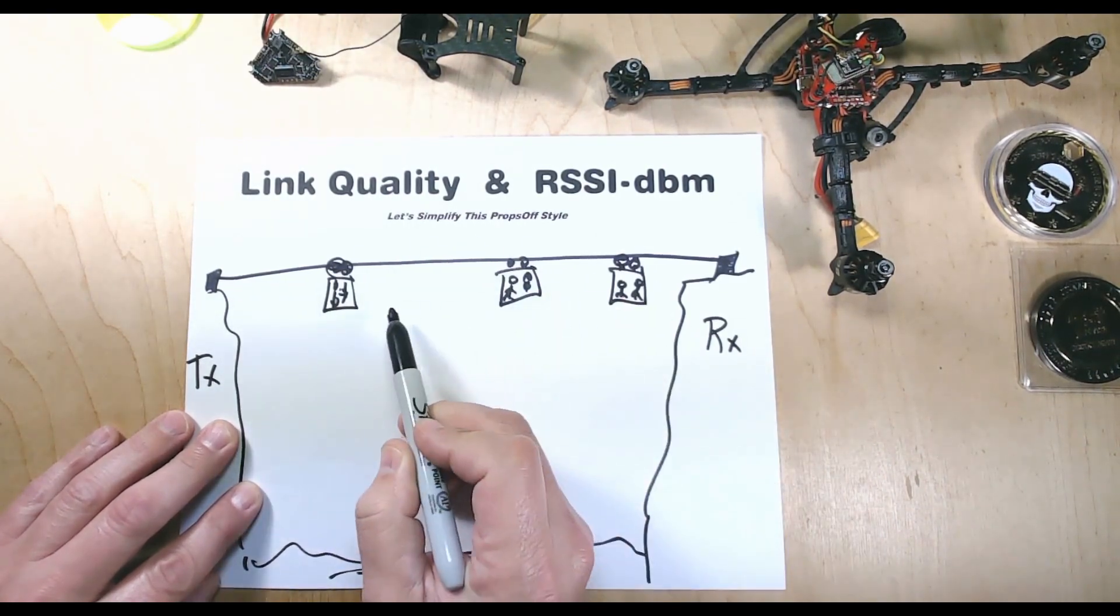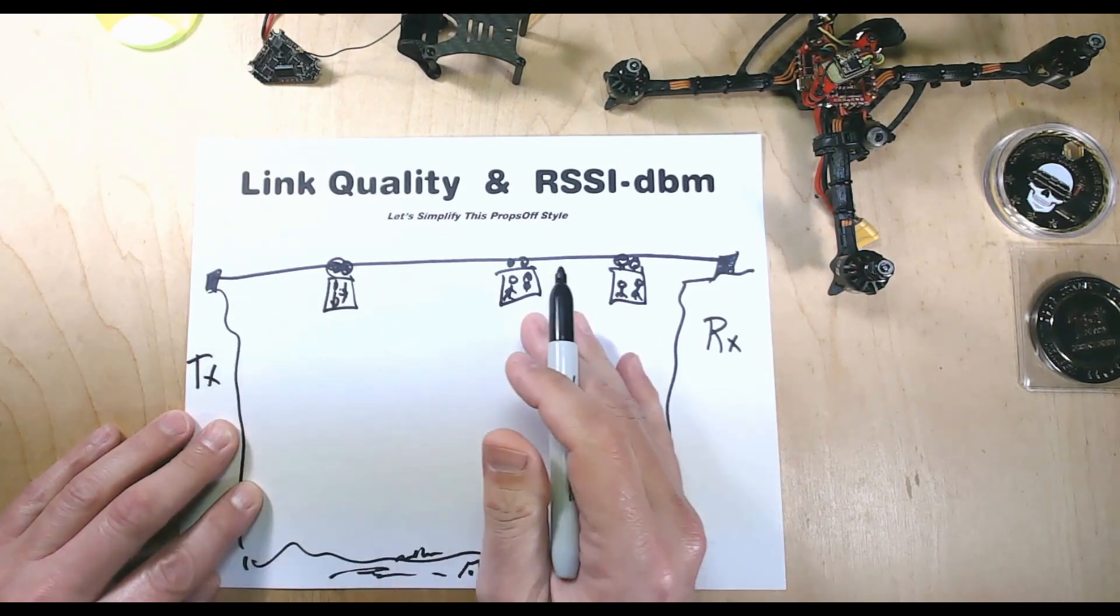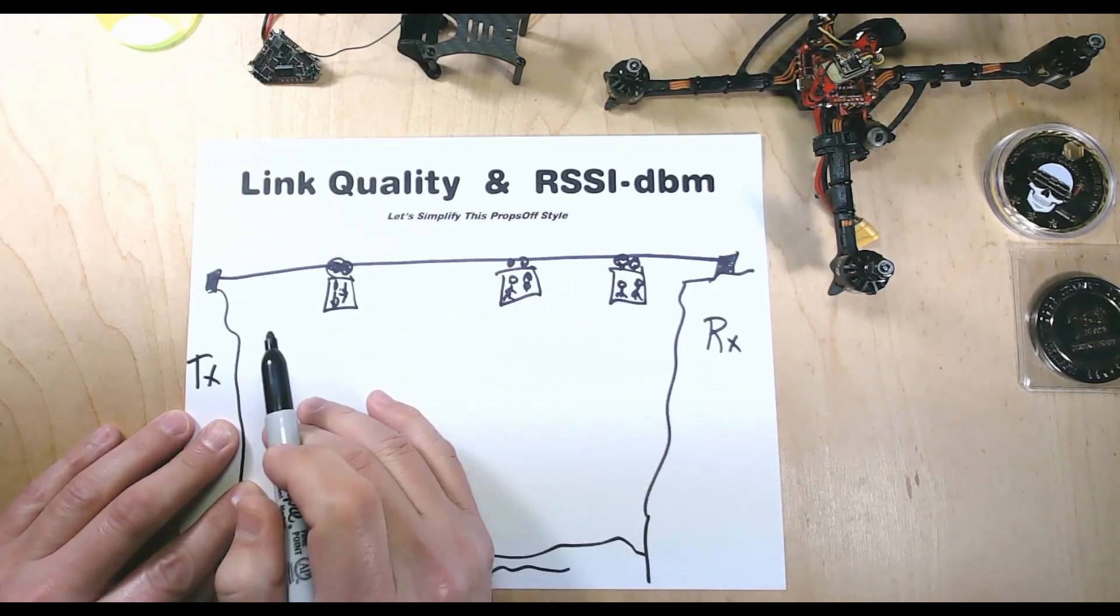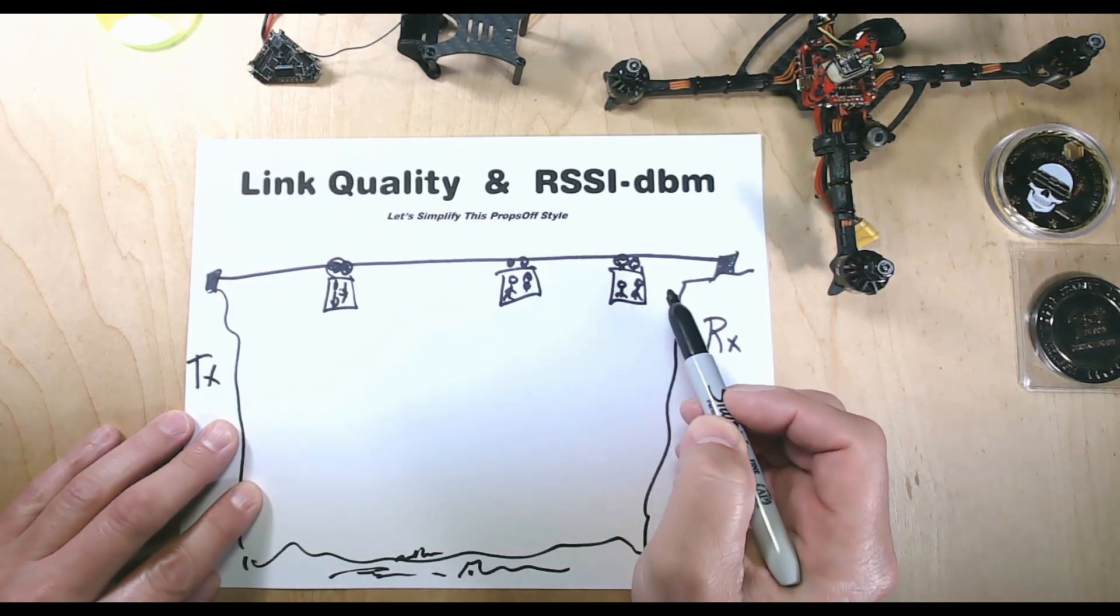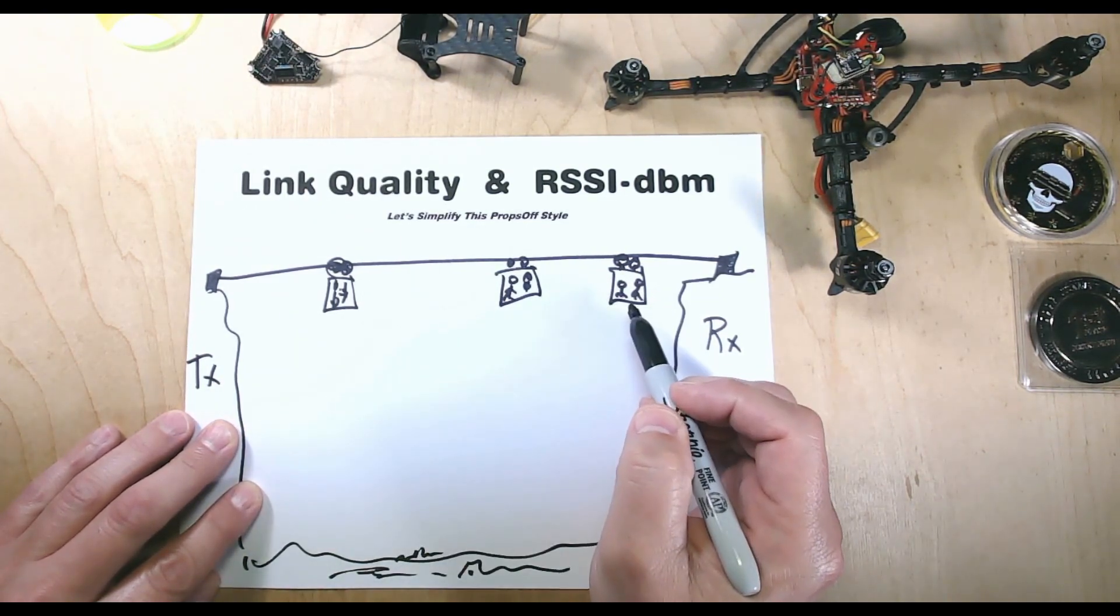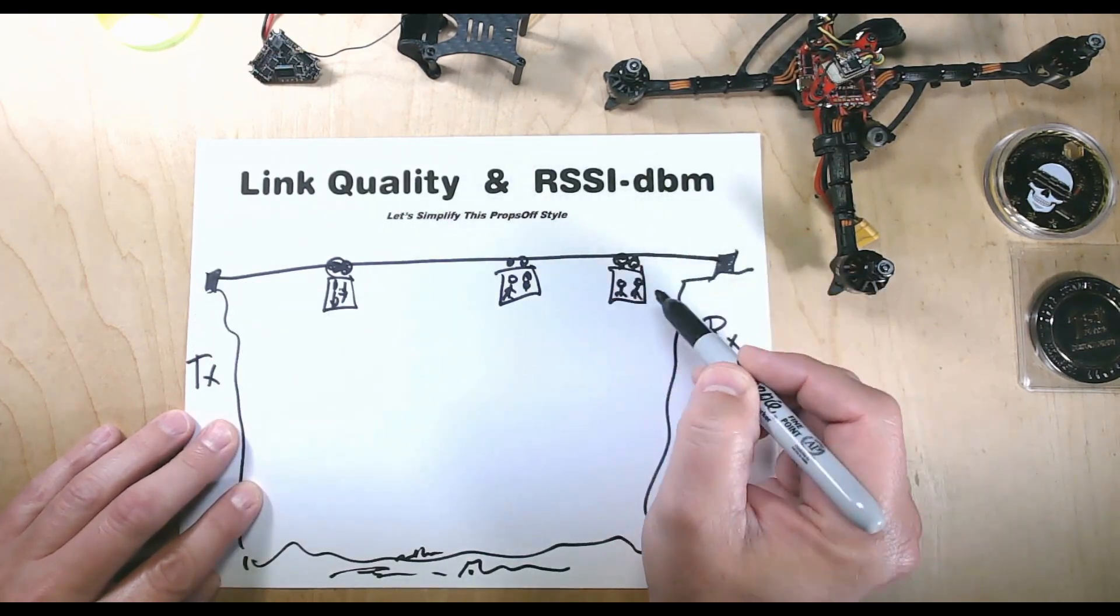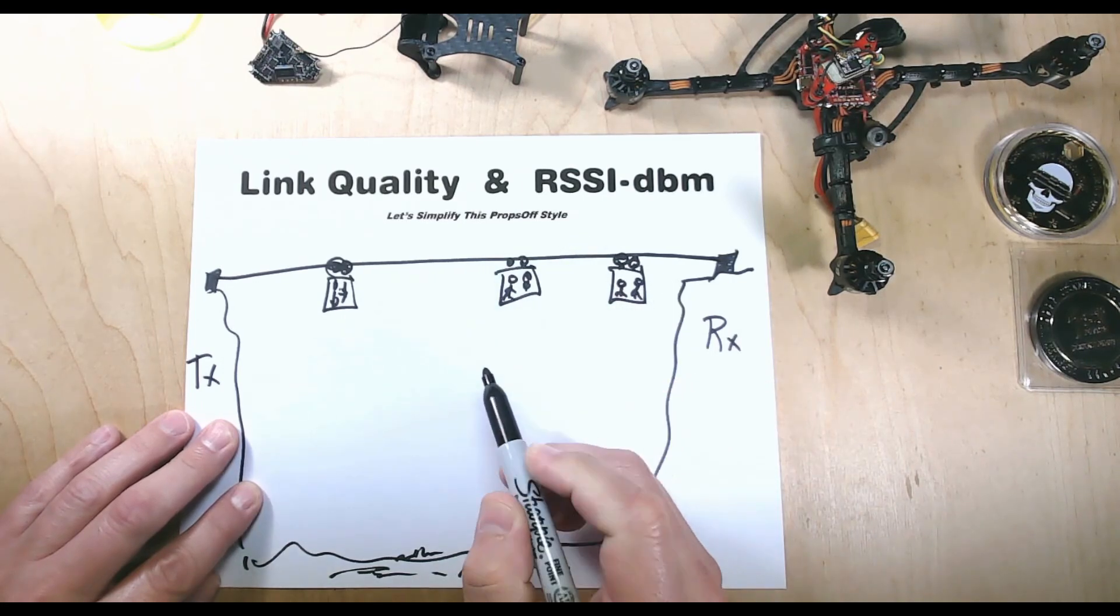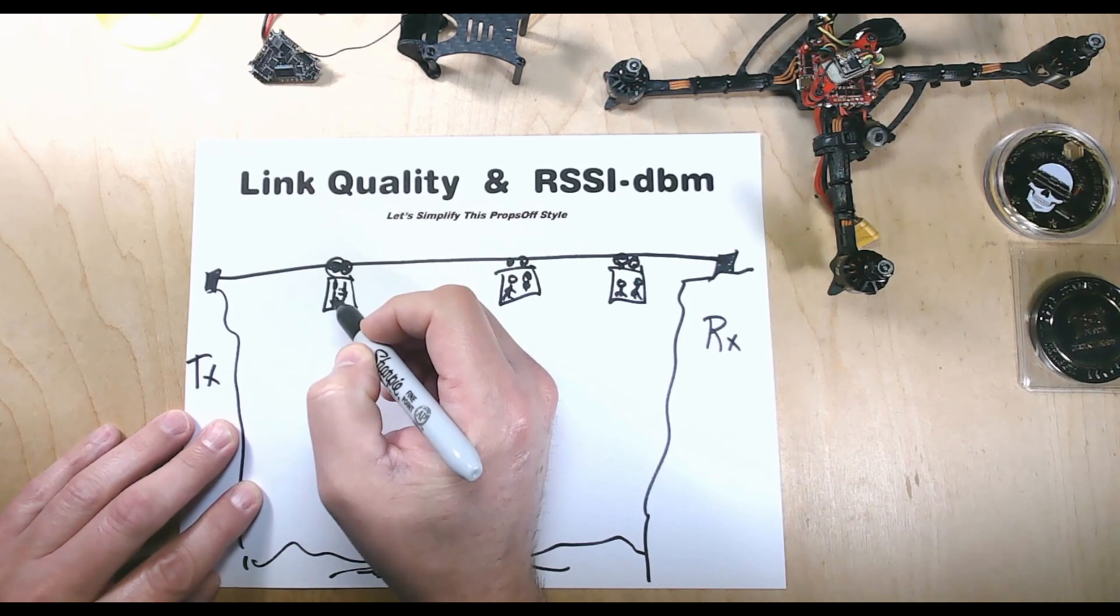As you increase your Hertz—your 500, 200, or 500 to a thousand Hertz—you have 500 packets of information per second. You can imagine this could get very full very quick, and we need to make sure that this RSSI-dbm is strong enough for these carriages. Link Quality is how good are these carriages.